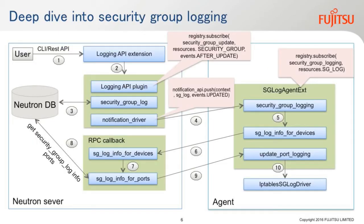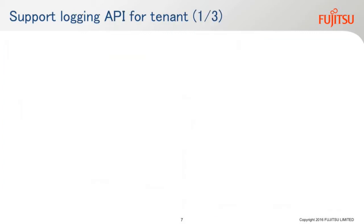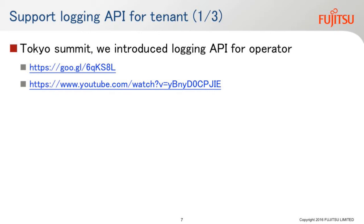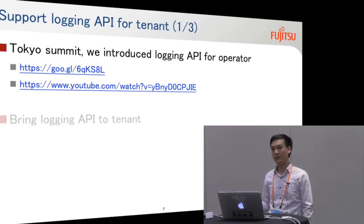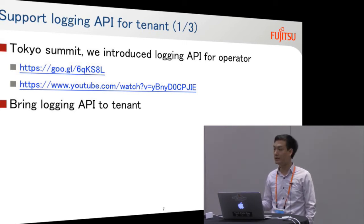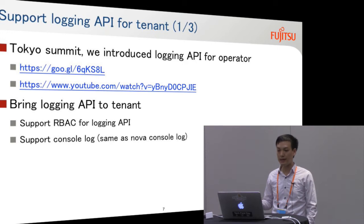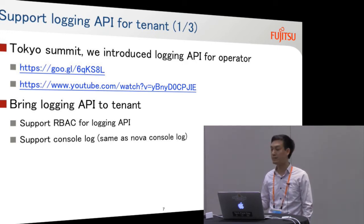The next slide is a deep dive into security group logging. In the Tokyo summit, we already introduced the logging API for the operator. Please refer to the following link for more detail about our detailed design supporting the operator. In the Austin summit, we are going to bring the logging API to tenants by supporting RBAC for the logging API and supporting the console log feature at Nova console log. For more detail about RBAC support and console log support, I will explain in the next slide.